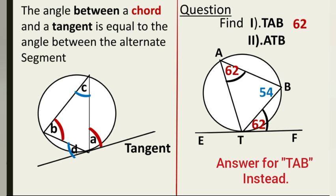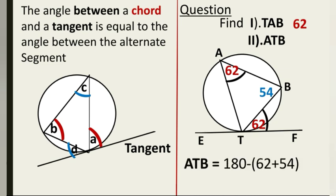To find angle ATB, we now have two angles in the triangle. We sum 62 plus 54 and subtract from 180. So angle ATB equals 180 minus (62 plus 54), giving 64 degrees. What you need to do is be familiar with how the diagram looks — identifying which angle is in the alternate segment and which angle is between the chord and the tangent — and you can ace questions of this type.